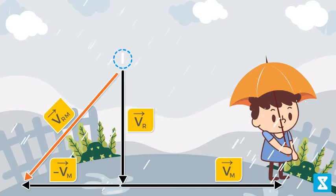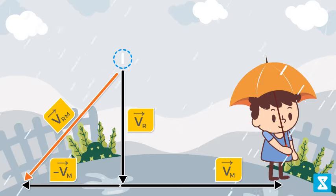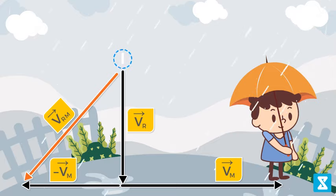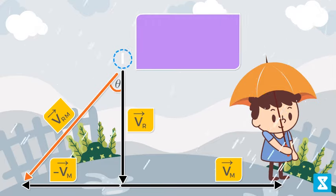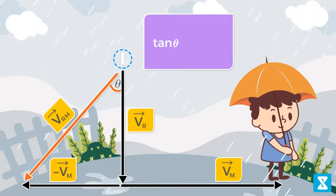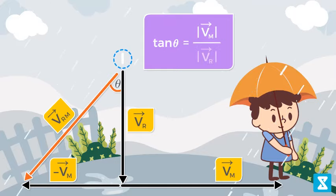The resultant of the two vectors will be in the direction of the velocity of rain drops with respect to the man. This means that the man will observe that the rain is falling at an angle theta from the vertical, where tan(theta) can be calculated as the ratio of the magnitudes v_m and v_r.